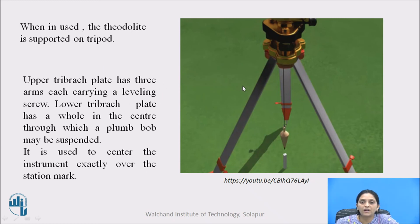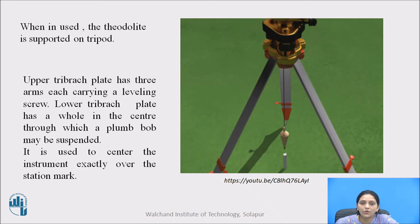These are the essential parts of the theodolite. When the theodolite is used, it is supported on a tripod. The upper base plate has three arms, each carrying a leveling screw, which is used to level the instrument. The lower base plate has a hole in the center through which a plumb bob is suspended. The suspended plumb bob is used to center the instrument exactly over the station mark — this process is called centering. In centering, the station and the center of the plumb bob should coincide exactly.